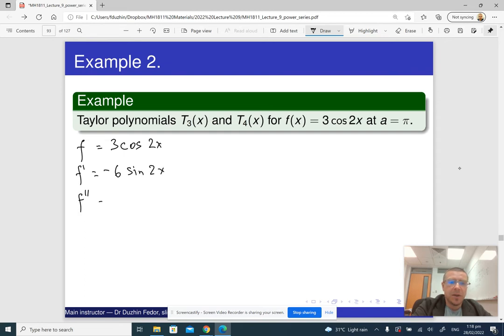f'' is minus 12 cosine 2x. The third derivative is 24 sine 2x.